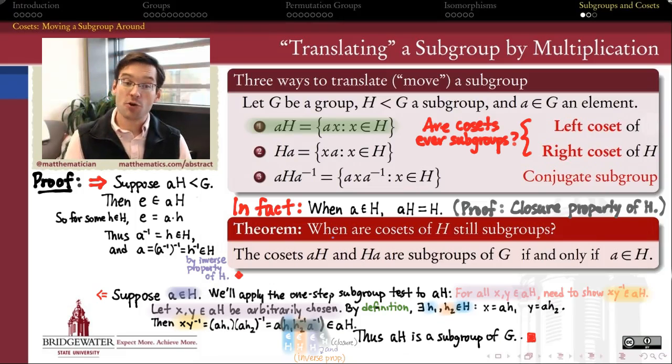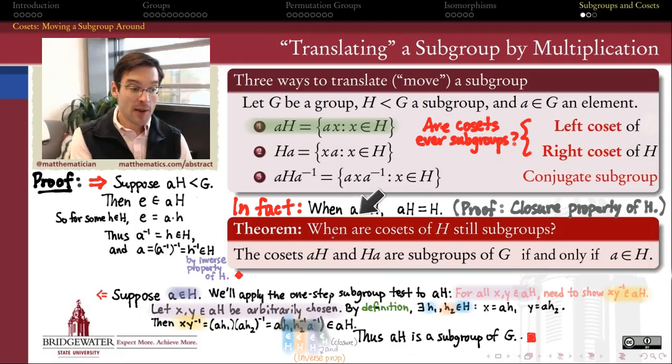It's really just the closure property that tells me why, when I multiply a subgroup H, all of its elements, by some element, one of its own, that the result is always just going to give me back the same subgroup. So for sure, the only cosets of H that are subgroups are H itself, and we make H itself by left-multiplying by one of its own elements, or right-multiplying by one of its own elements.